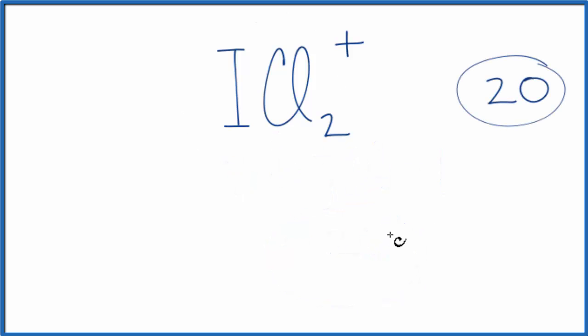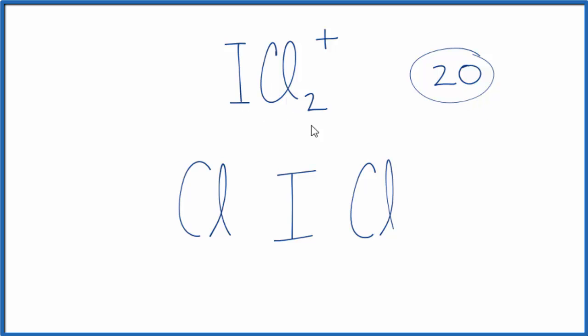Iodine is the least electronegative element, so we'll put that in the center of our Lewis structure. Then we'll put 2 chlorine atoms on either side. We have 20 valence electrons total. We'll put 2 between the atoms to form chemical bonds. We've used 4.